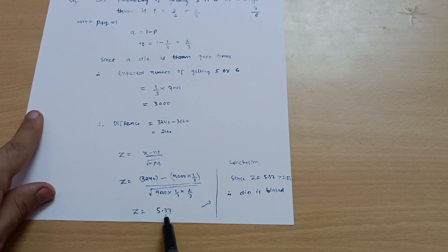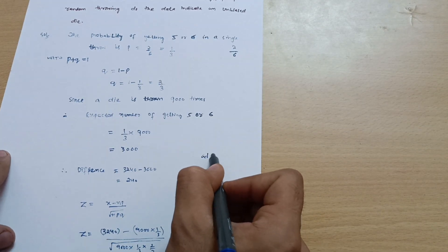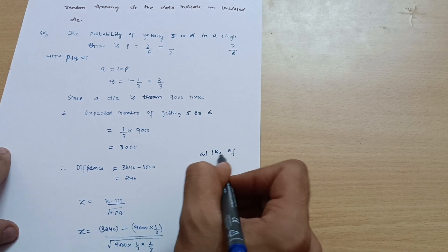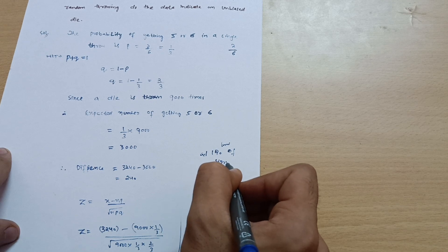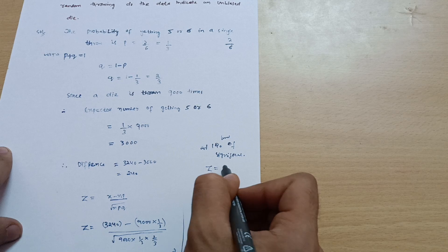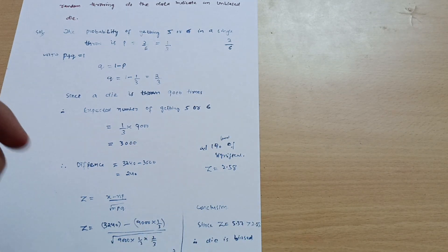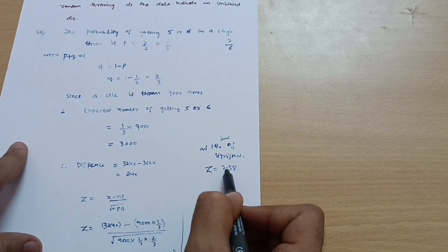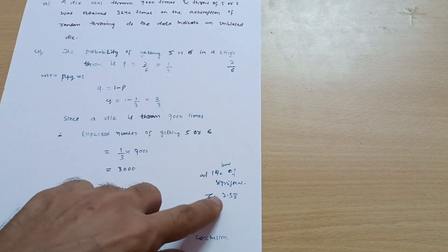You should know that at one percent level of significance, if we are checking biased or unbiased, the standard value of z is 2.58. So you have to check at this particular value. Whenever it is not mentioned in the question, compare with this value.